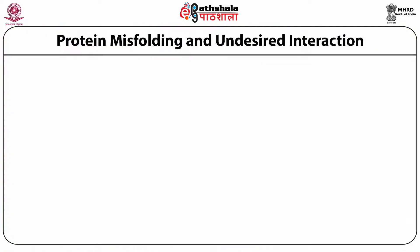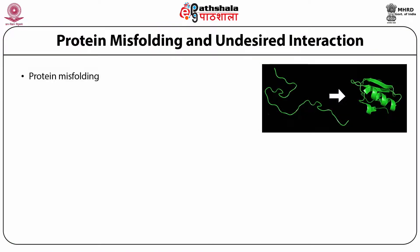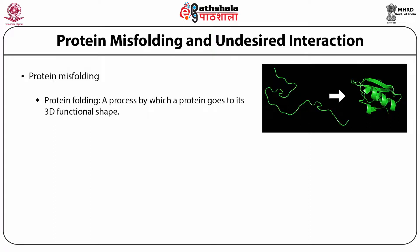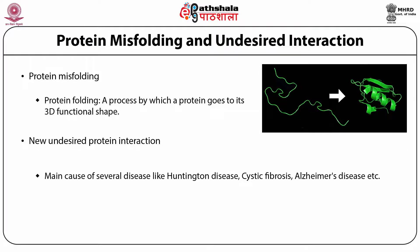Protein-DNA interaction disruptions include the p53 tumor suppressor — mutations in the p53 DNA-binding domain destroy its ability to bind its target DNA sequence, causing prevention of several anti-cancer mechanisms. Protein misfolding is a process by which a protein fails to achieve its 3D functional shape, also known as denaturation of proteins. Undesired protein interactions are the main cause of several diseases like Huntington's disease, cystic fibrosis, and Alzheimer's disease.